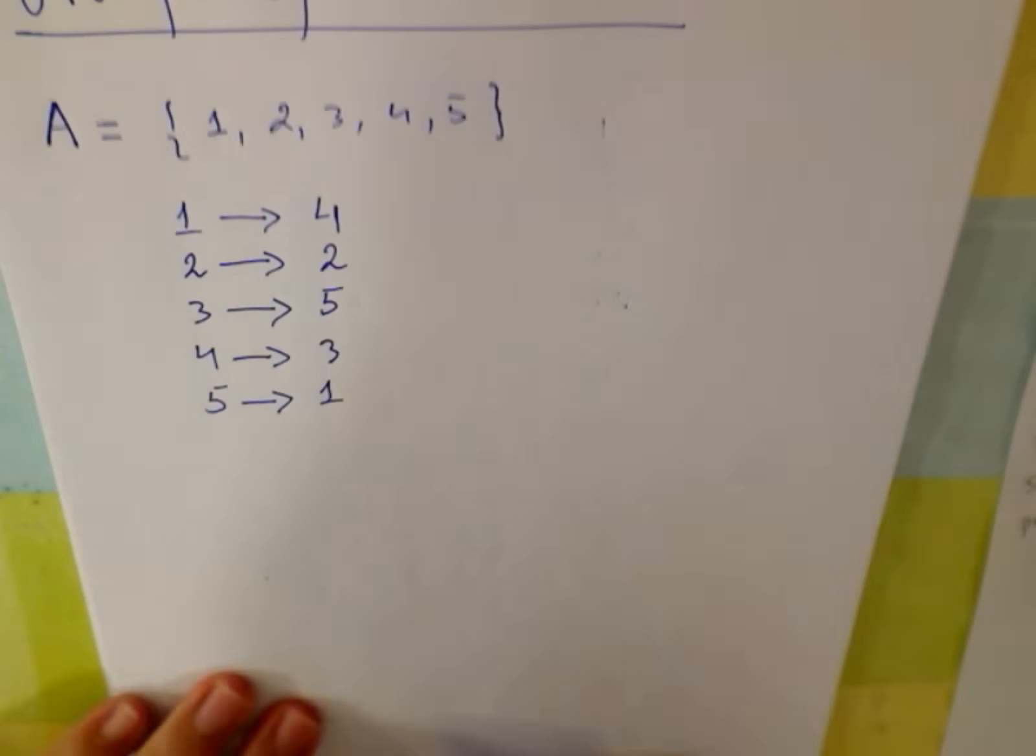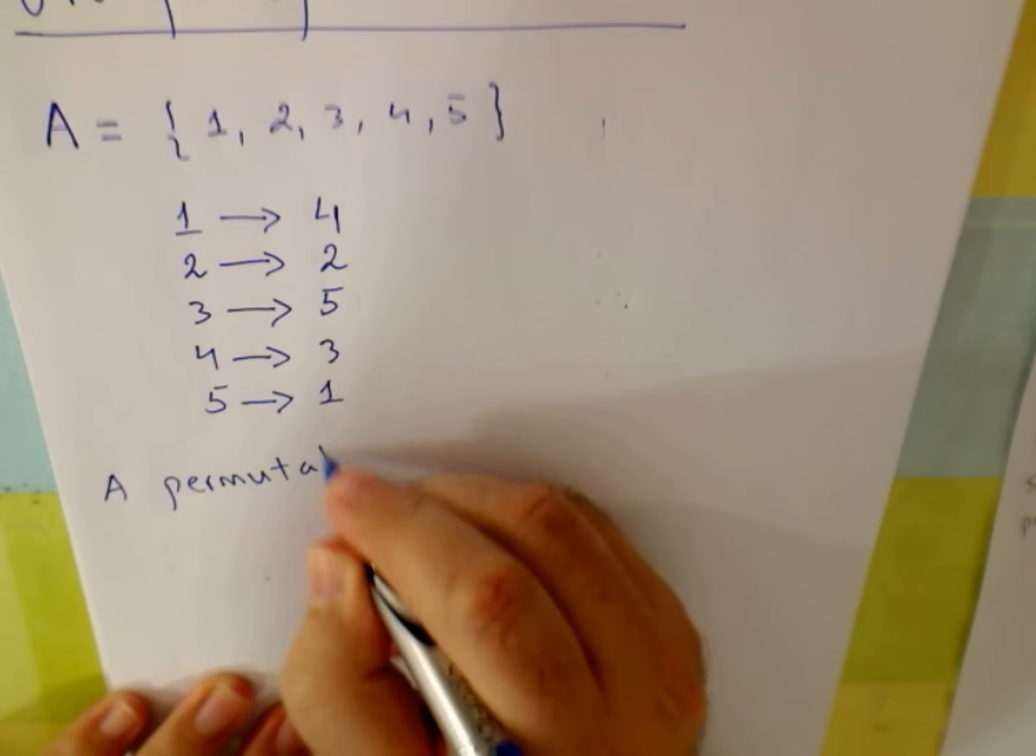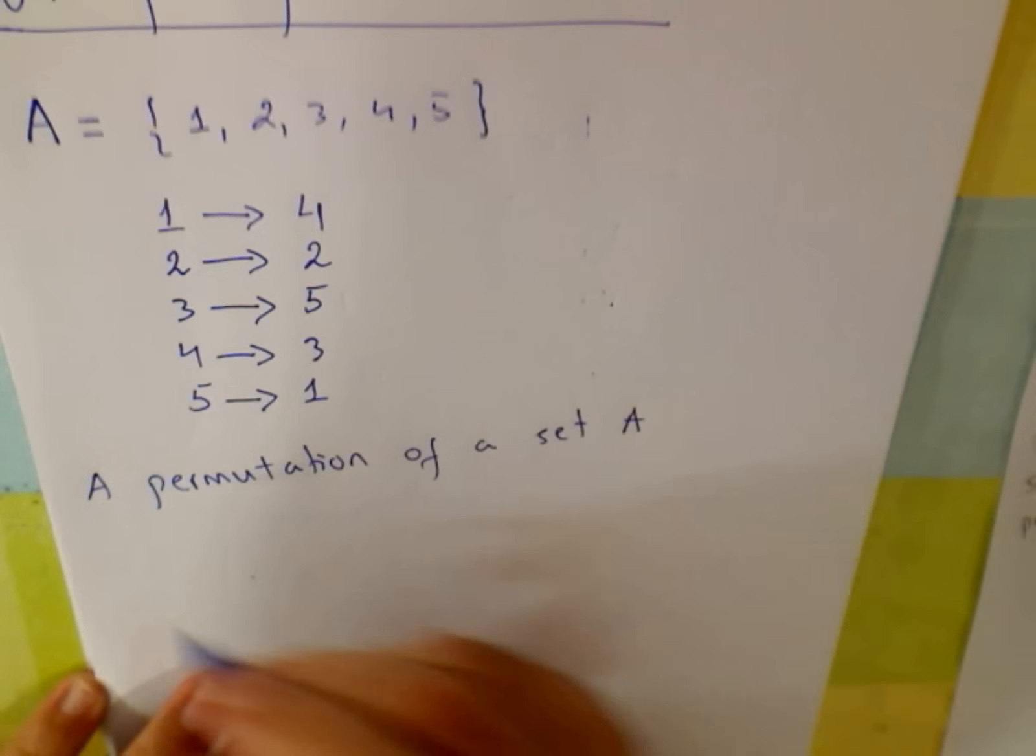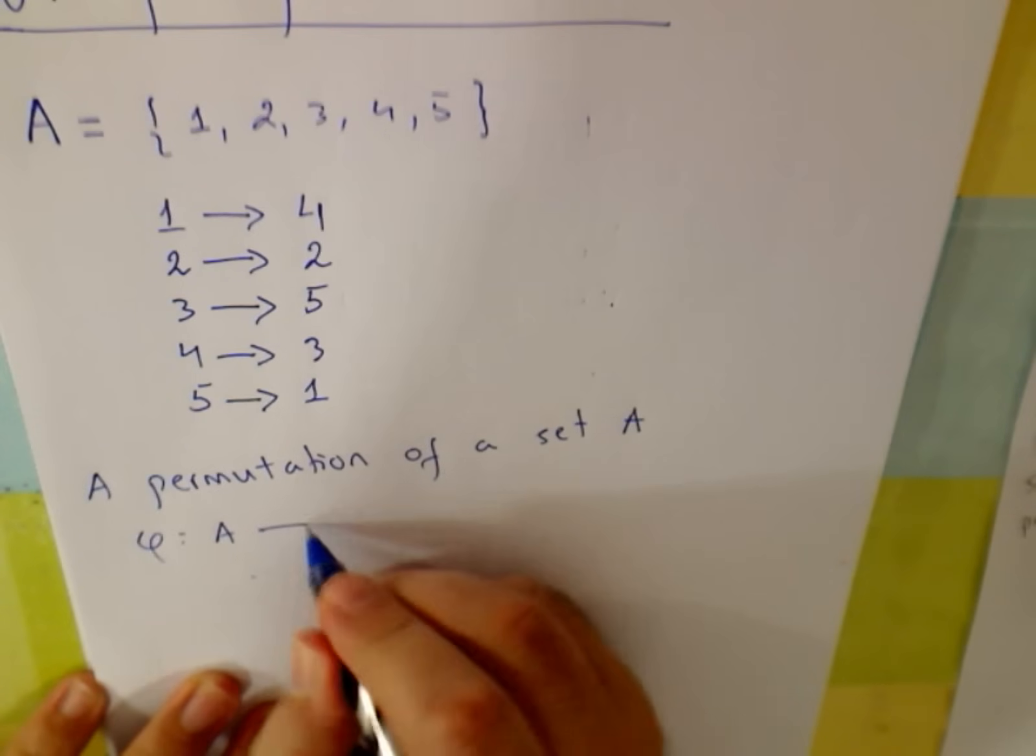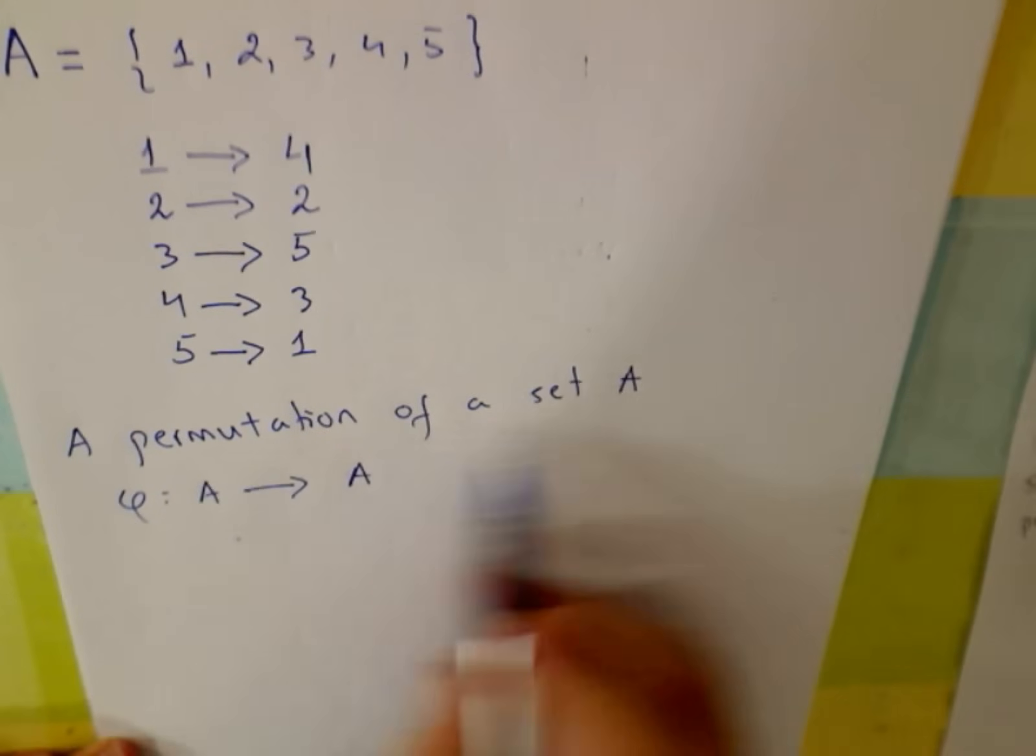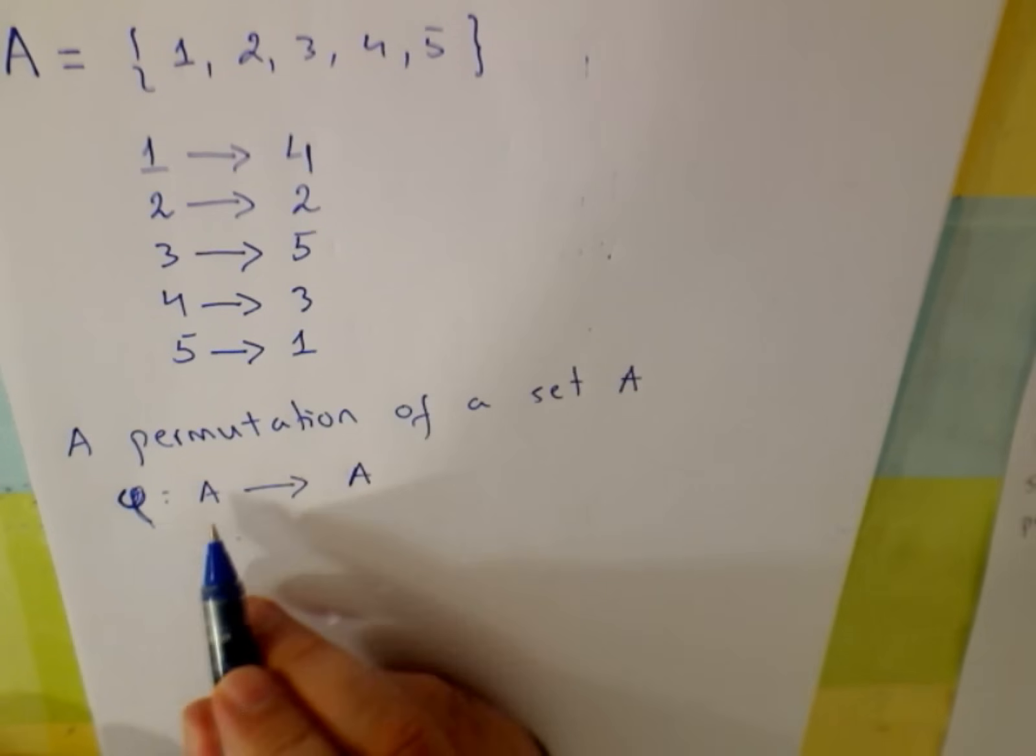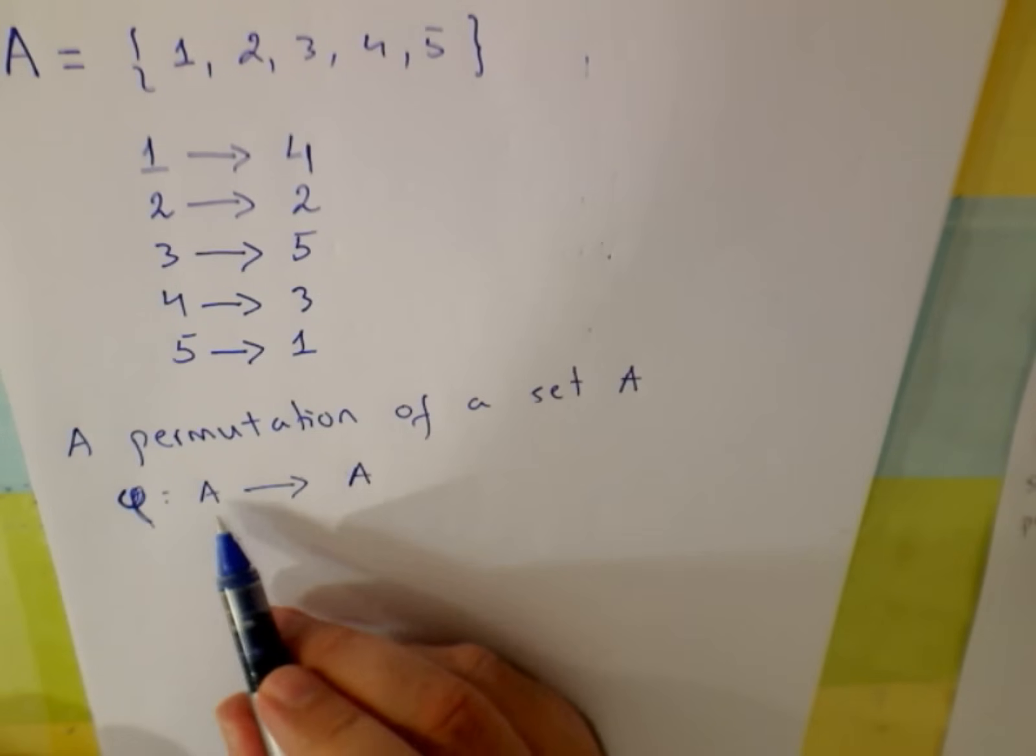What we have here is a permutation of a set A. A permutation of a set A is a function that takes from A to A. And that is what a permutation of a set is. At the end of the day is a function. This function has to be bijective. So it has to be 1 to 1 and onto. Injective and surjective too.